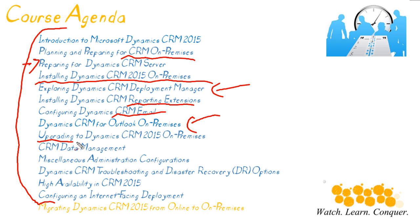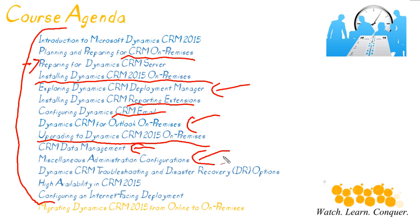We're going to look at the process of upgrading to Dynamics CRM 2015 in the event you have an earlier version. Because all data is stored in SQL Server, we'll talk about data management, how to encrypt the data, and making sure the data isn't taking up too much space in SQL Server. Then we'll cover some miscellaneous configurations — my smorgasbord where items don't fit into the other categories. And as an IT pro we have to be concerned with monitoring, troubleshooting, DR, and high availability — making sure this system is readily available to users at all times.